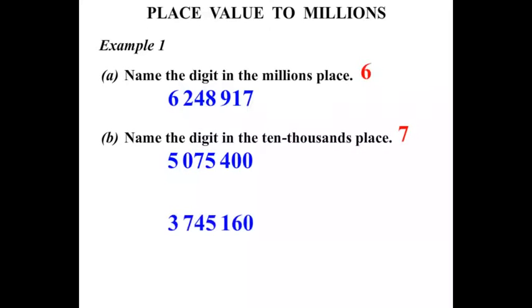This next number, 3,745,160. We need to name the digit in the hundreds place. Ones, tens, hundreds. So the answer is 1. Fantastic.